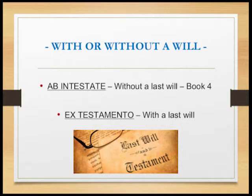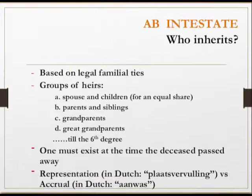If you say that's not what you want, you have to get advice. If you don't want certain persons to inherit from you, then you must make a will. What we call an estate without a will, we call it ab intestate. Ex testamento is with a will.